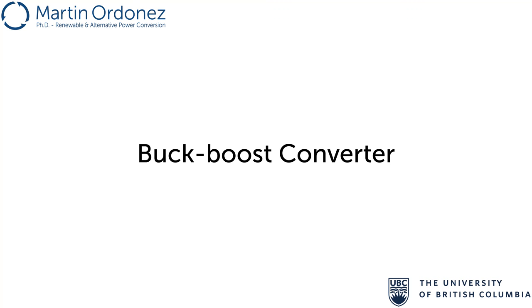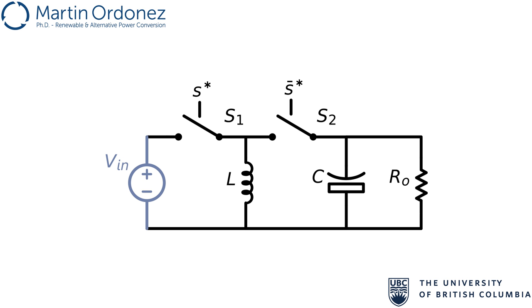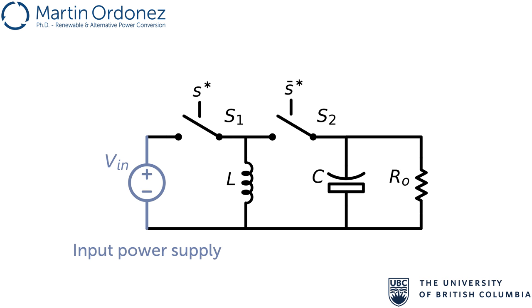The buck-boost converter is a switch topology that takes a DC input voltage VIN and transforms it into a DC output voltage VOUT, which has reverse polarity when compared to the input voltage. The output voltage can be smaller, equal, or larger than the input voltage, but its polarity is always negative with respect to the input ground.